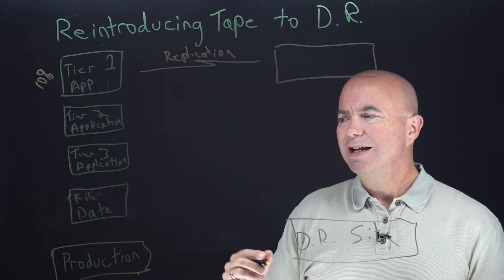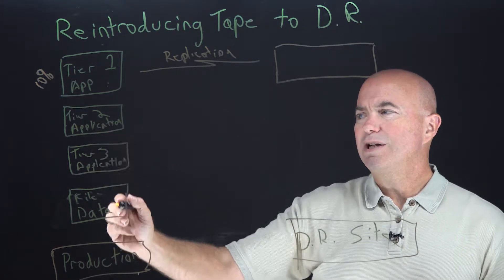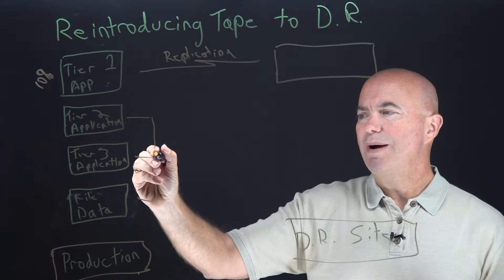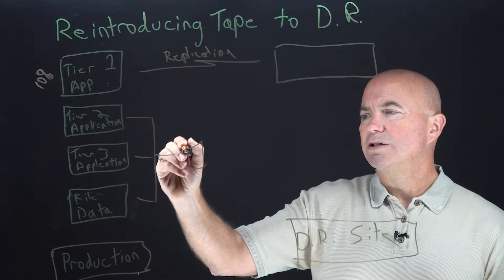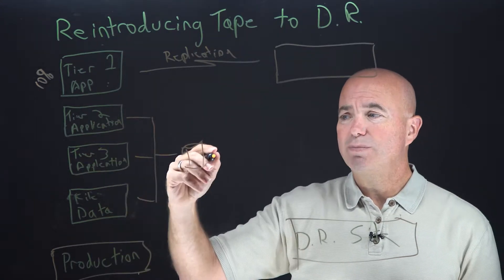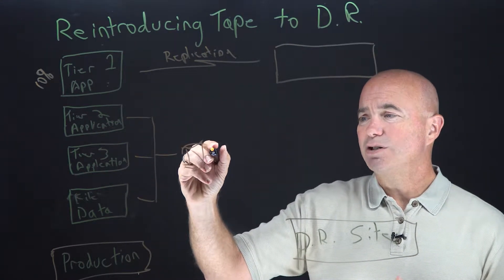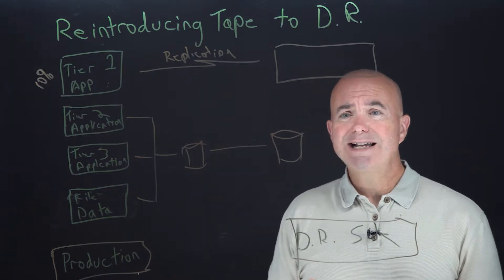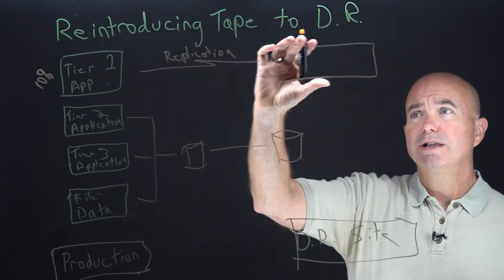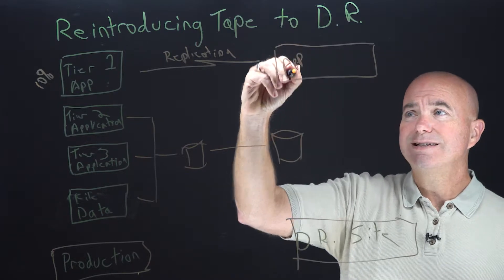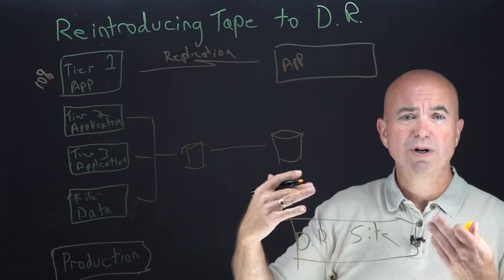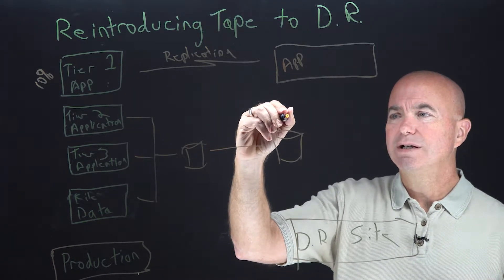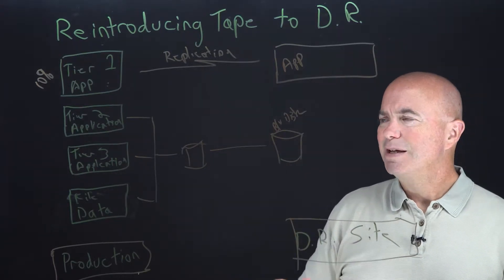Now let's talk about tier two applications. Typically, all of these three classes of applications are going to go through their normal backup process and count on the normal backup process for disaster recovery. As we explained in that last video, that means we're probably backing up to disk, and then that also means that we're replicating to another backup disk in the DR site.